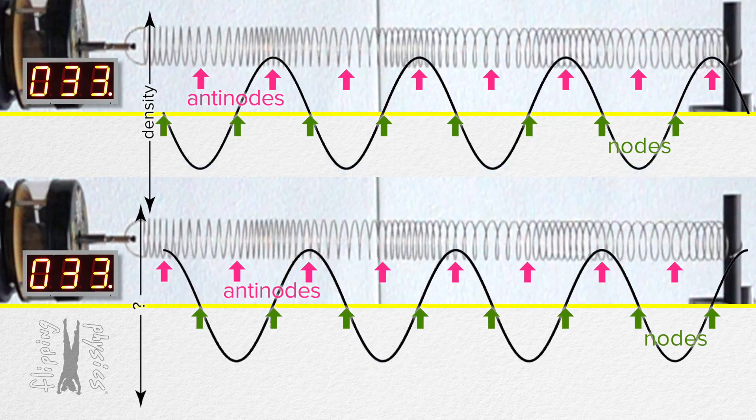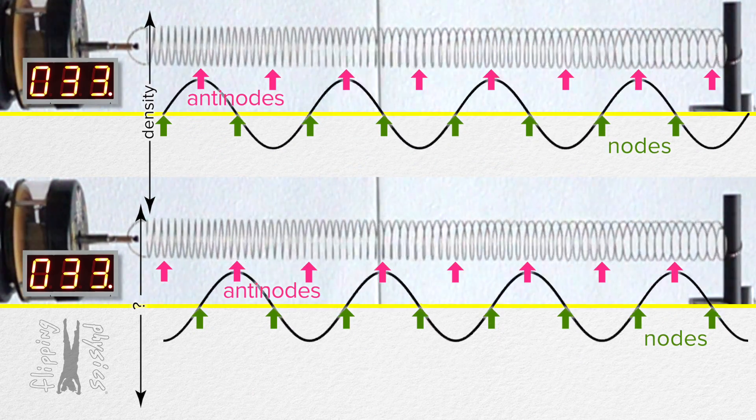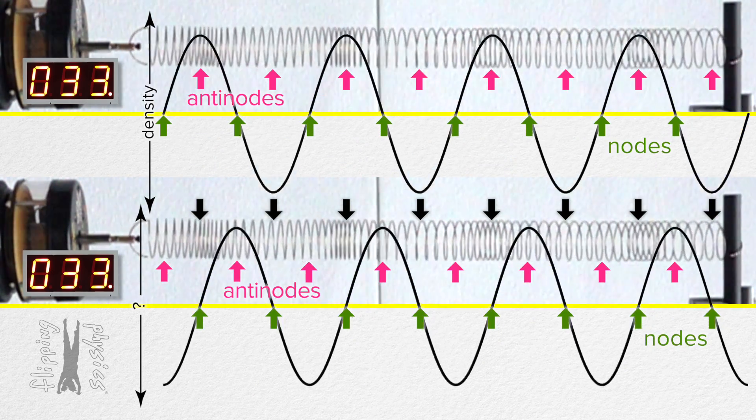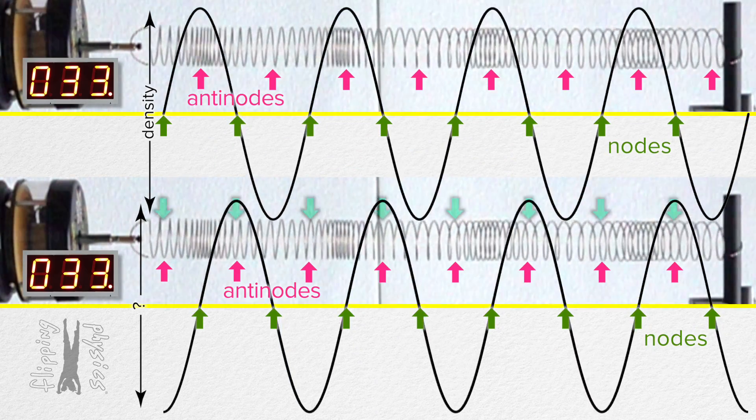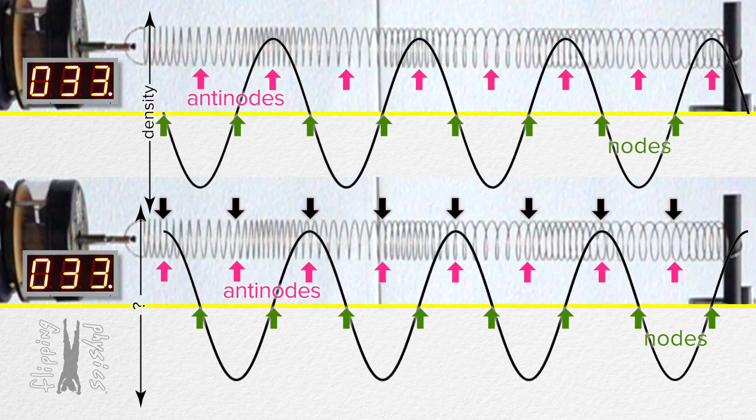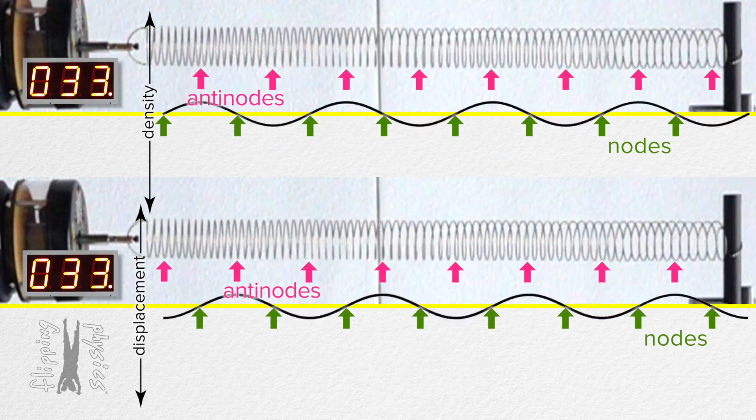What do you think the bottom animation is showing now? Well, it looks like the spring does not change positions at each of the nodes. And the spring has its largest change in position at the anti-nodes. Oh, so the bottom animation is showing displacement nodes and anti-nodes. Cool.